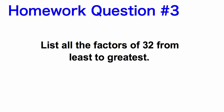Homework question number 3: List all of the factors of 32 from least to greatest. Make sure you think this through — a lot of students list just a couple of factors and think they're done. Make sure you're making a factor rainbow, using your multiplication facts and divisibility rules to get all of the factors of 32.